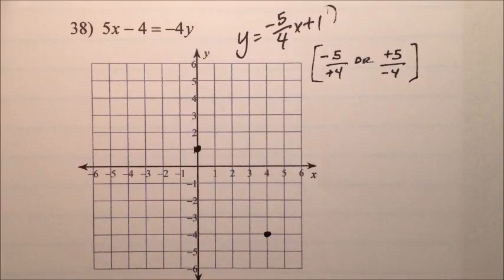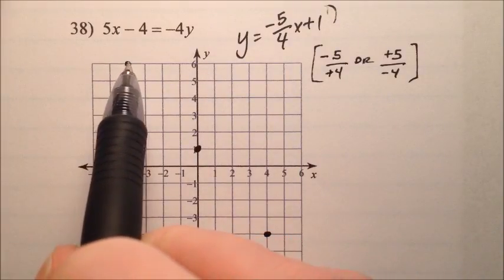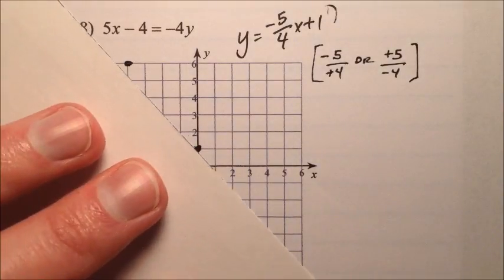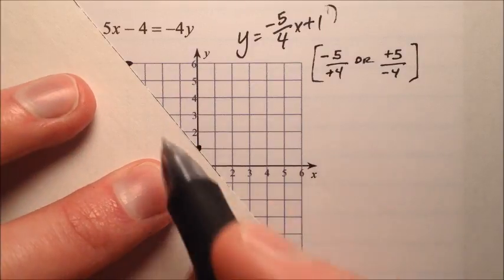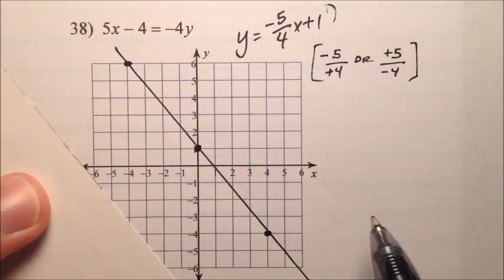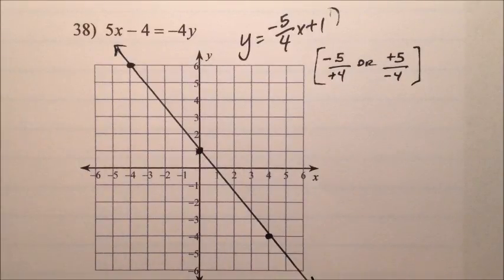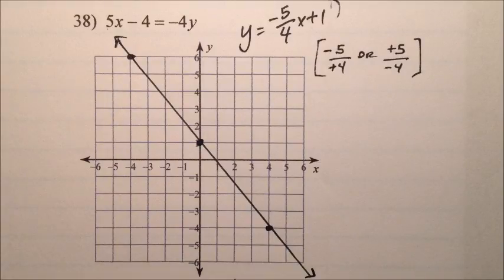Or I can go up 5 and back 4. Then I have 3 points and I'll bring over my line here. Bring over my straight edge to draw my line. And there we go right there. Notice that my slope was negative. So I knew that my line would be decreasing, which it is. So number 38. There's the graph of y equals negative 5 fourths x plus 1.